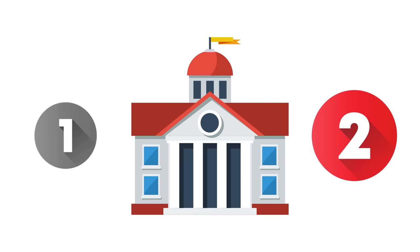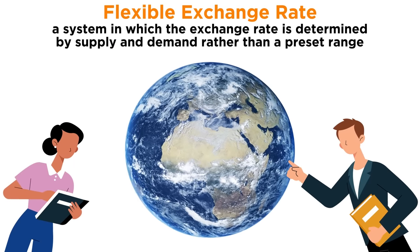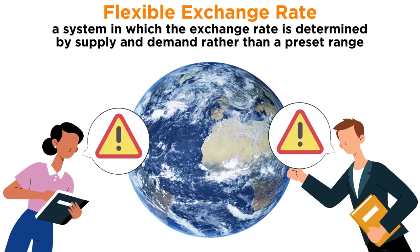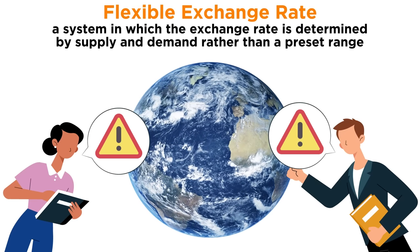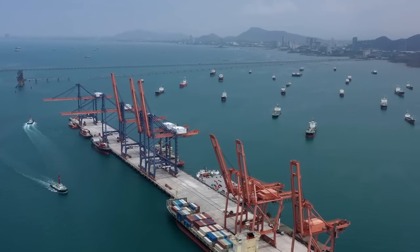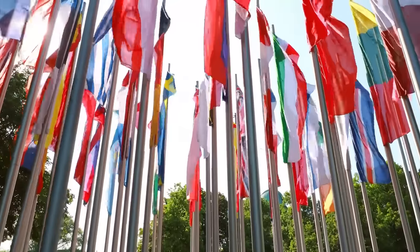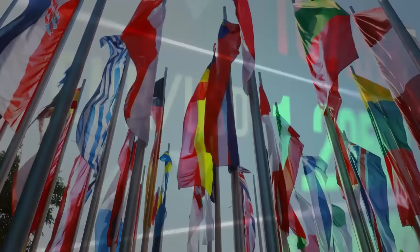The second way governments adjust the values of their country's currencies to other countries' currencies is a flexible exchange system. In this system, the exchange rate is determined by supply and demand, rather than according to any preset range. When the current flexible exchange rate system was first adopted, some economists worried that changes in the exchange rate might interfere with the flow of world trade. However, trade has actually grown quickly since the flexible exchange rate system was adopted. Today, most countries use a mixture of fixed and flexible exchange rates to account for the day-to-day changes in currency values.